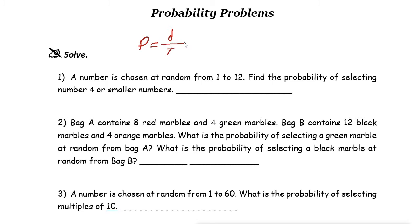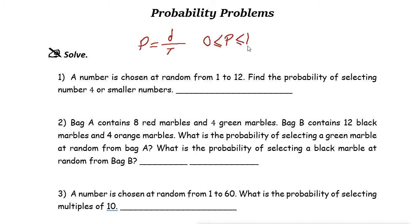The smallest possible value could be zero, so the value of P could be less than or equal to one, or greater than or equal to zero. So P is always between zero and one.